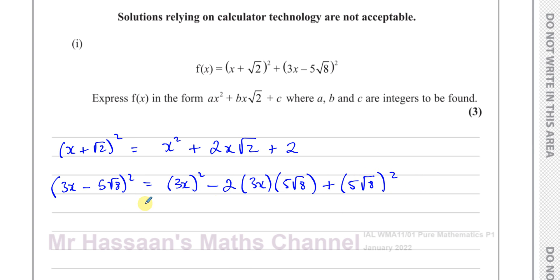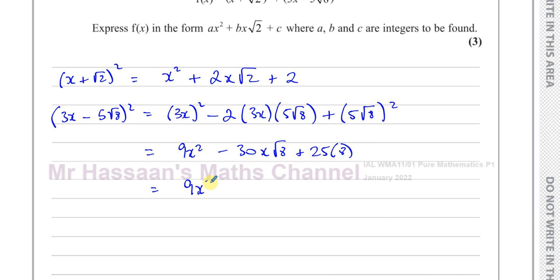So now this needs to be simplified. 3x all squared is 9x². You have minus 2 times 3, which is minus 6x times 5. So that's minus 30x times √8. And then I'm going to have plus, and this is 5², which is 25, times √8 squared, which is 8. So this will be 25 times 8. Just continuing to simplify this, you end up with 9x² minus 30x√8 plus 8 times 25. Well, 4 times 25 is 100. This is going to be 200. So that's how you expand this bracket.